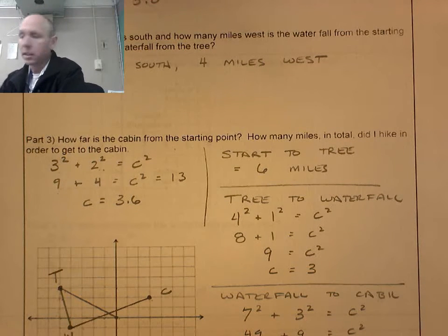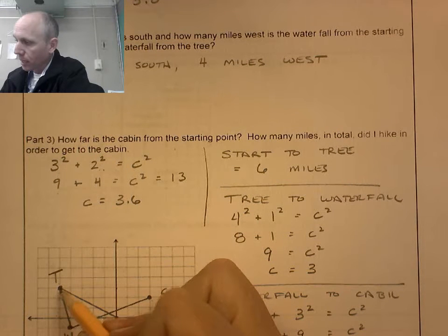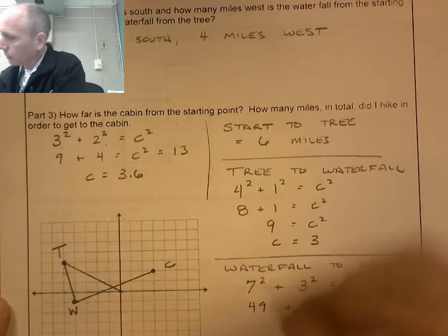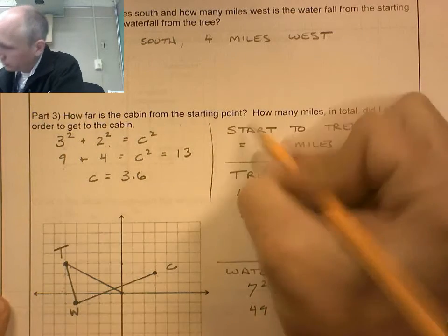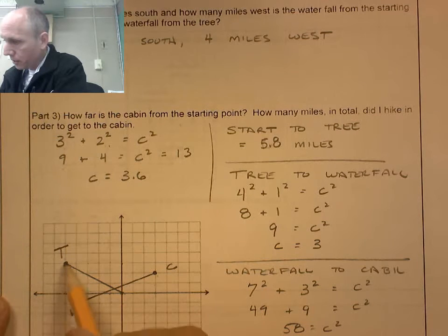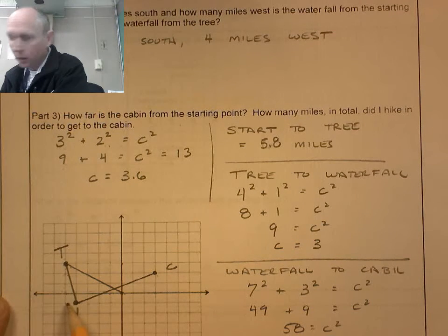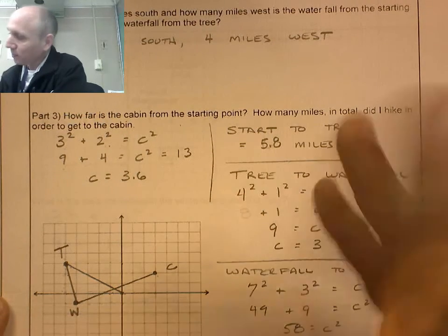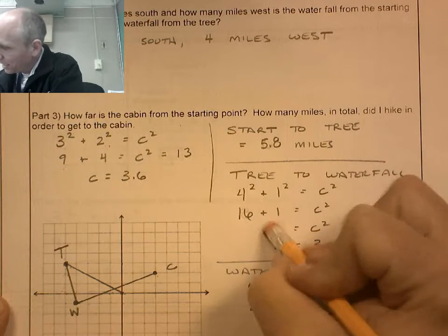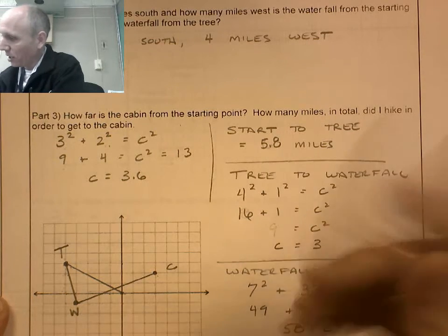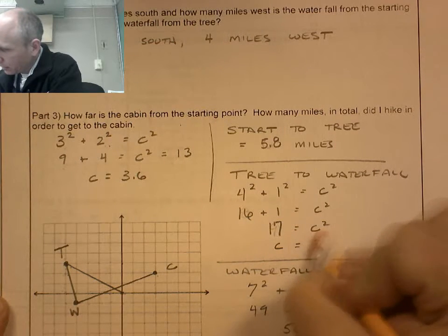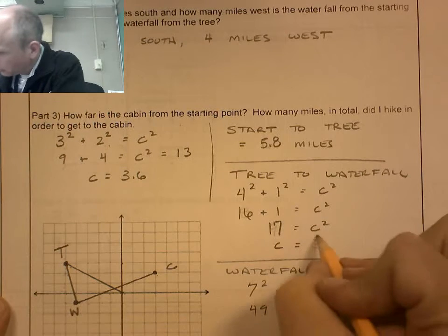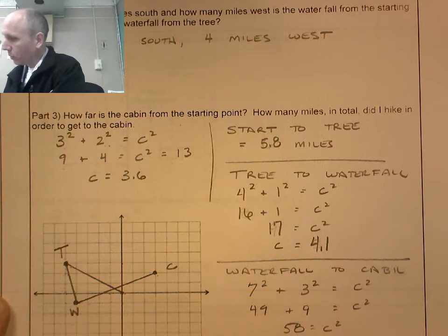How many miles in total did I hike in order to get to the cabin? I went to the tree, I went to the waterfall, I went to the cabin. Starting to the tree is 5.8. Tree to the waterfall. I did a 4 and a 1. 4 and 1, Pythagorean theorem, that gave me 16 plus 1, which gives me a square root of 17, about 4.1. So 5.8, 4.1. And then I went waterfall to cabin.